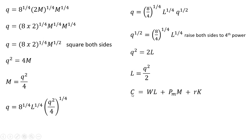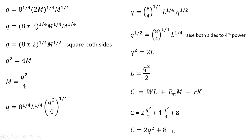So the firm's cost function is going to be the wage times L plus price of materials times materials plus the price of capital times units of capital. Let's make our substitutions into this equation. W is two, L is Q squared divided by two, the price of materials was four dollars, M is Q squared divided by four, and R is one and K is eight, so that just simplifies to eight. Simplifying this further, here is our short-run total cost equation: two times Q squared plus eight. Okay, that's it. I hope you found this video helpful.